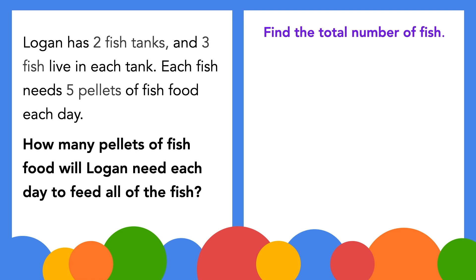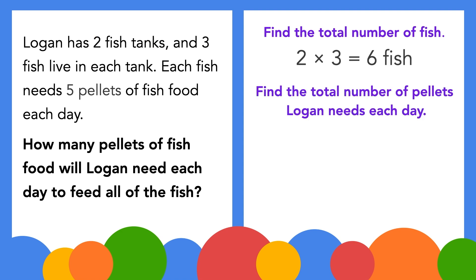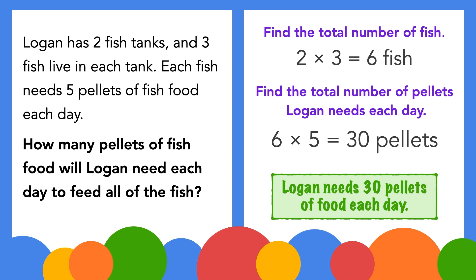Here, we first need to find the total number of fish. There are two fish tanks, and three fish live in each tank. We'll multiply to find the total number. Two times three equals six, so there are six fish. Now we can find the total number of pellets Logan needs to feed his fish each day. We know there are six fish, and each fish needs five pellets of food each day. So we'll multiply to find the total number of pellets needed. Six times five equals thirty. So Logan needs thirty pellets of food each day.